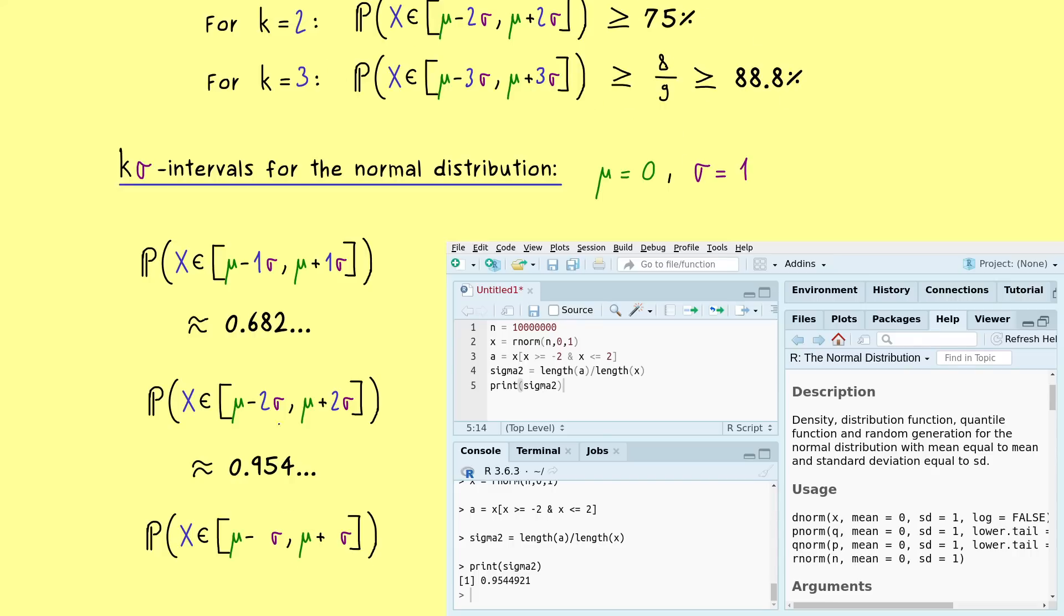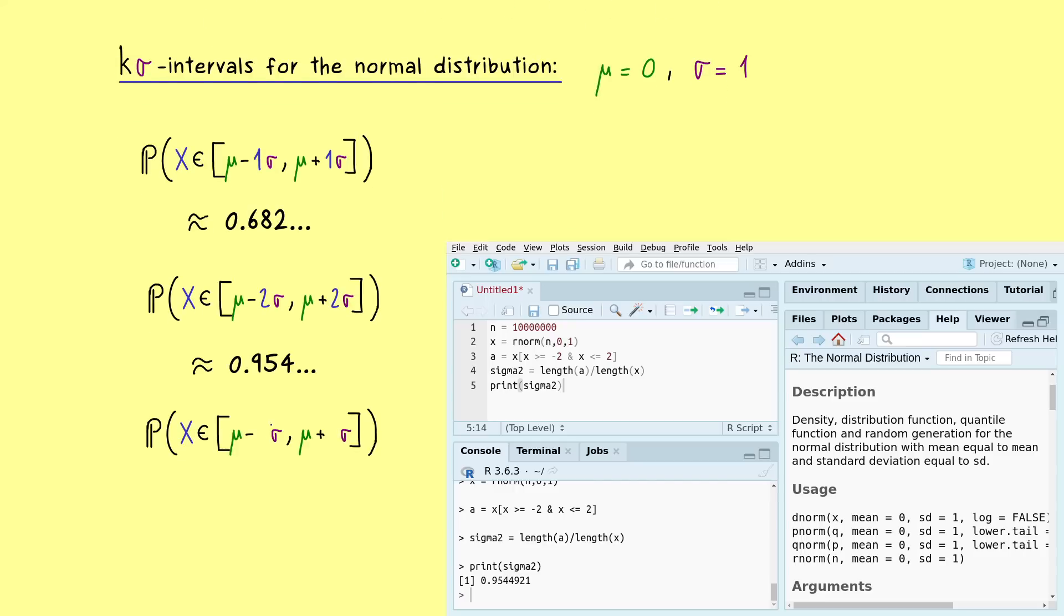In fact, the 3-sigma interval for the normal distribution is already really high. Again, in order to calculate it here in R, we don't have to change much. Here we have a minus 3 and there a plus 3. And then as before, let's simply run it again and again. And then we see, we are at 99%.